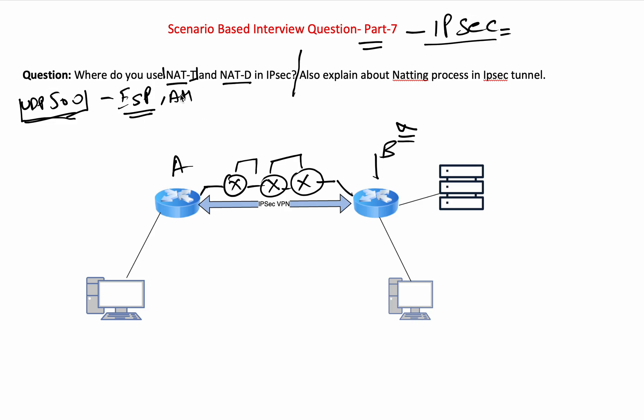In main mode, the first two messages, we have NAT-T check. Third and fourth, we will check if there is any NAT device in between. So we will send a NAT discovery packet. And in fifth and sixth, finally we will use NATing. We will use UDP port 4500 for NATing.